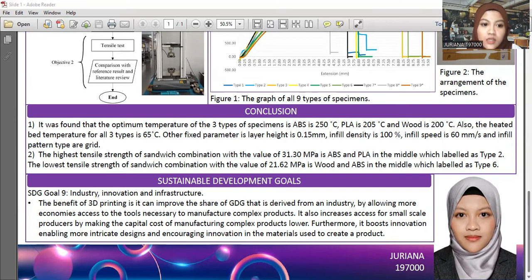The next conclusion: the highest tensile strength of sandwich combinations is 31.30 MPa for Type 2, which is ABS-PLA-ABS with PLA in the middle. The lowest tensile strength is 21.62 MPa for Type 6, which is wood and ABS with ABS in the middle.